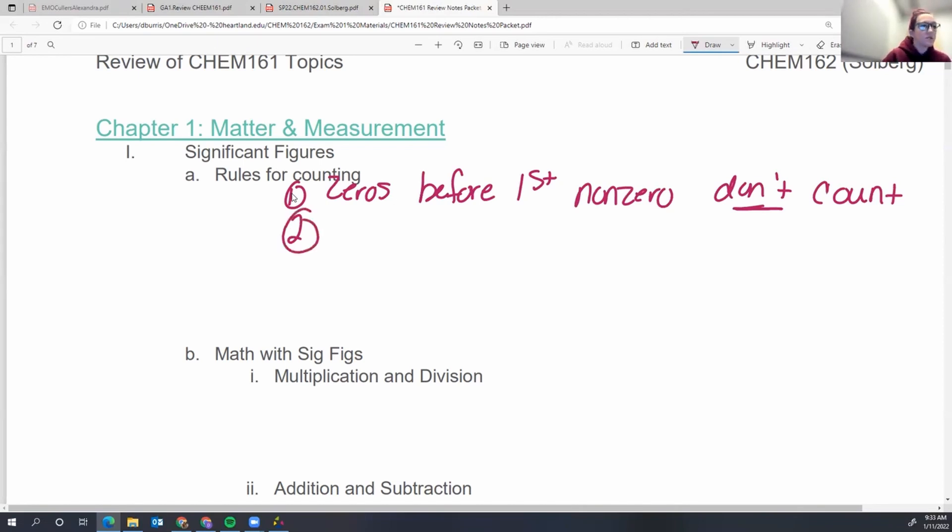Rule number two: sandwich zeros do count. Zeros sandwiched right between numbers do count.